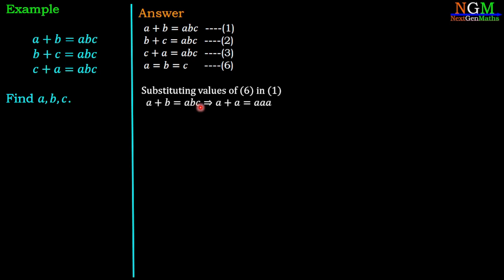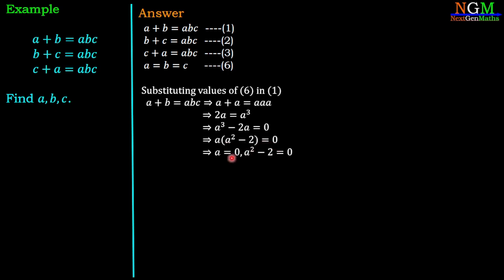This gives us 2A equals A cubed, which we rewrite as A cubed minus 2A equals 0. Factoring out A, we get A times (A squared minus 2) equals 0. This yields two equations: A equals 0 and A squared minus 2 equals 0, so A squared equals 2. Therefore A has three possible values: A equals 0, A equals positive square root 2, and A equals negative square root 2.